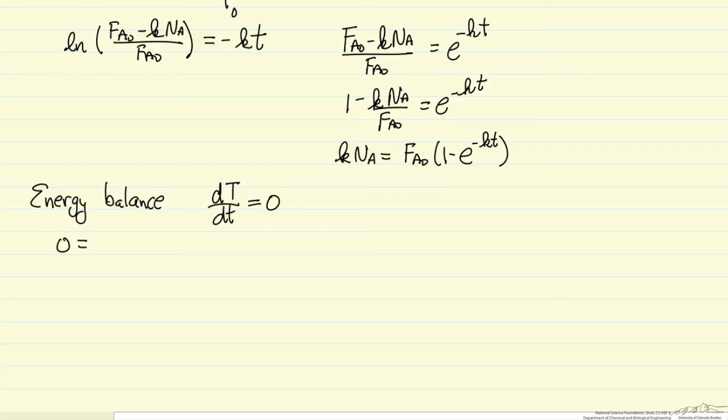So the energy balance is termed due to the fact we're flowing in A at 25 degrees C, and we need to heat that to 100 degrees C. And then we're generating heat from the heat reaction, rate of reaction times volume, and then removing heat through heat transfer.